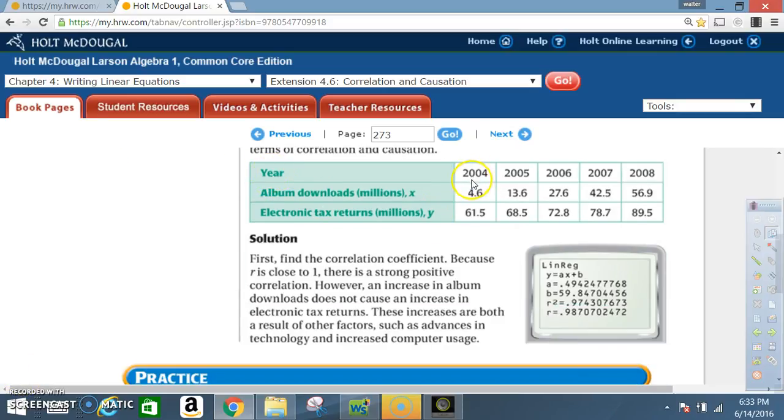The table gives us the year 2004 through 2008. Album downloads in millions is variable x, and electronic tax returns in millions is denoted by y. Solution: First, find the correlation coefficient.